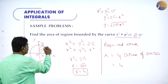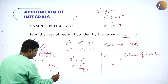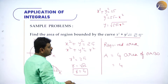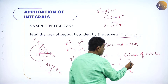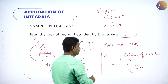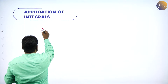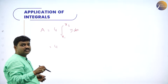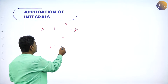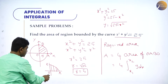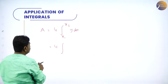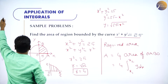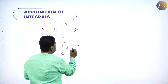Required area A equals 4 times area of OAB. This is the area under the curve and X axis. Area under the curve and X axis is integration of X1 to X2, Y DX. X varies from 0 to 5, since radius is 5. So, A equals 4 times integration from 0 to 5 of root of 25 minus X square DX.